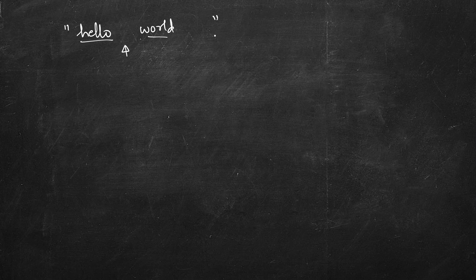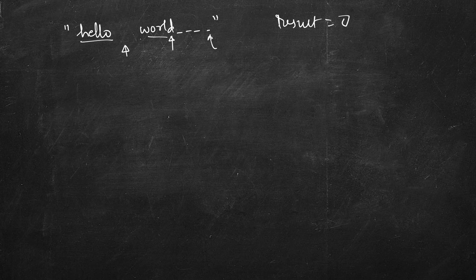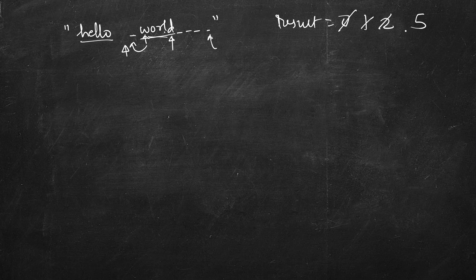We start from the end. Result is zero. We see a space so we don't increment. Space, space, space — now this is not a space, so we increment result to one. Again not a space, increment, and increment all the way through 'world' until result becomes five. Next we hit a space, so we return five. In all the earlier space cases result was not greater than zero, and we stop when we reach the beginning.